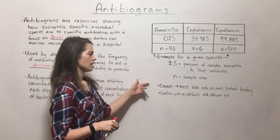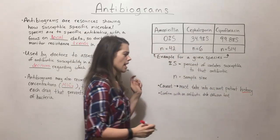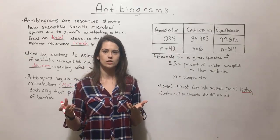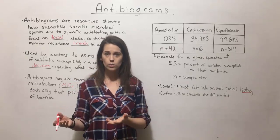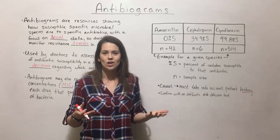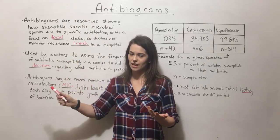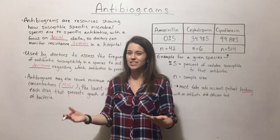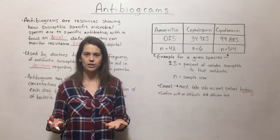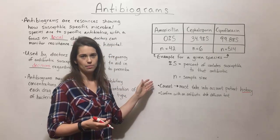There are a couple of caveats to keep in mind. One is to take into account patient history. If a patient contracts a disease at Disney World in Florida and then flies home to Montana where they see a doctor, a doctor using an antibiogram for local isolates in, say, Bozeman, Montana, may not find it very helpful if the patient actually picked up that bacterial infection in a completely different location. So taking into account where the patient has been can be really helpful.